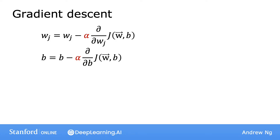As a reminder, here's the gradient descent rule, and one of the key choices is the choice of the learning rate alpha.